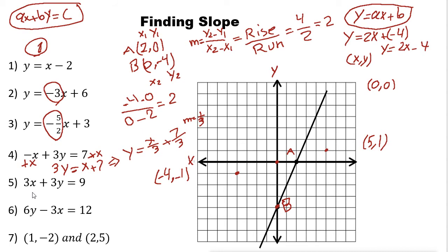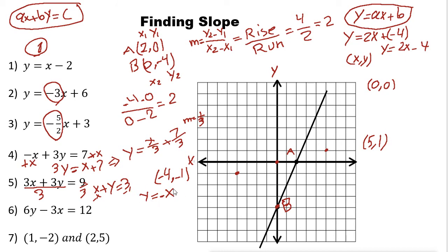For 3X + 3Y = 9: since all terms are divisible by 3, divide everything by 3 to get X + Y = 3. Then subtract X from both sides to get Y = −X + 3. The slope of this line is negative 1.